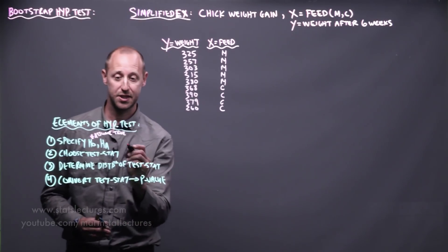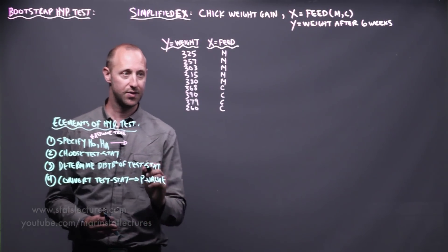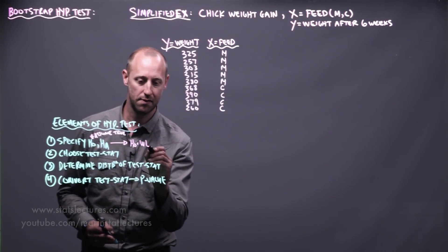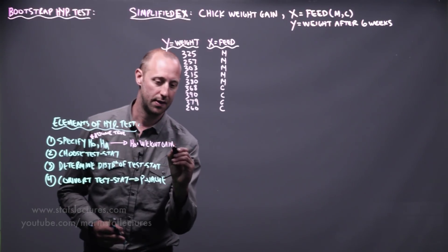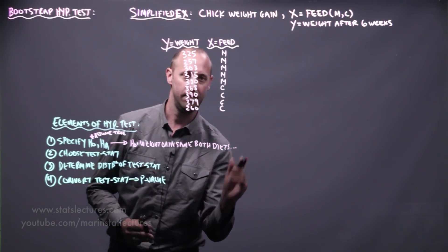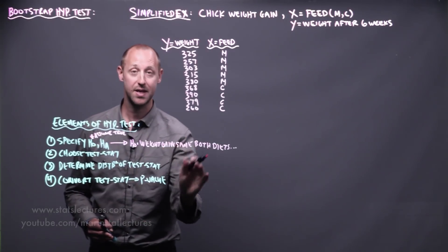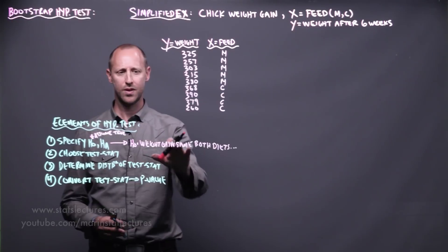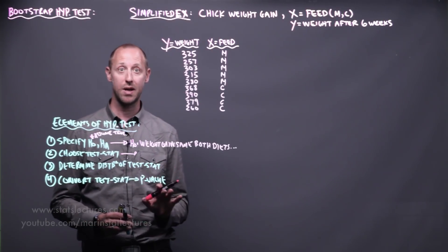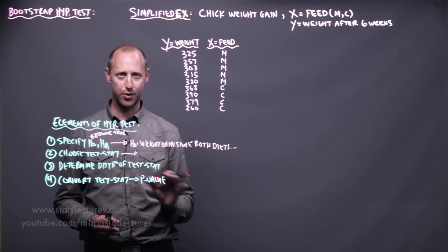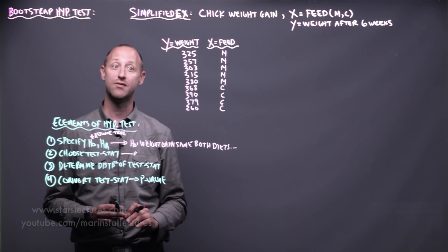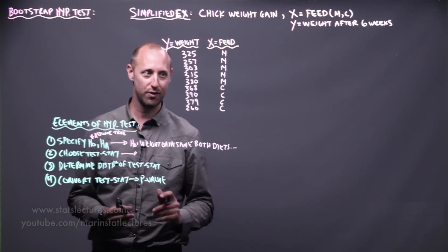The first thing to do is specify a null and alternative hypothesis. The null hypothesis is that weight gain is the same on both diets — they have the same distribution of weights. Then we choose our test statistic. I'm going to use two different test statistics to show how we can apply a bootstrap test using difference in means as well as difference in medians, just to compare two different approaches at once.